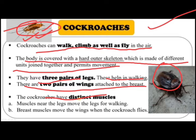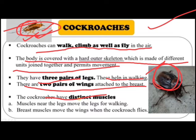Cockroaches walk in a very interesting manner — moving three legs at a time. Three legs support the body while the other three move the body forward. Then the roles reverse: the three legs that previously supported the body now move it forward, while the other three now support it. Strong muscles pull these legs to help them walk or run.